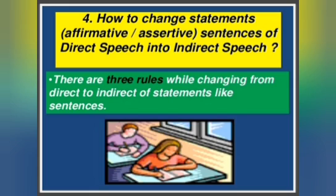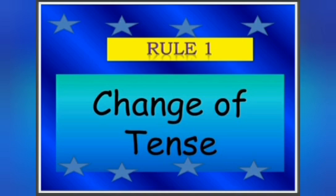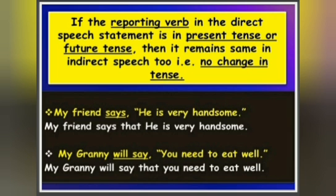There are three rules for changing from direct to indirect speech. Rule number one deals with change of tenses. First, if the reporting verb in the direct speech is in present tense or future tense, then it remains the same in indirect speech — there is no change in tense. For example: 'My friend says, he is very handsome.' The indirect form would be: 'My friend says that he is very handsome.' Since 'says' is the reporting verb in present tense, there is no change in tense.